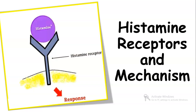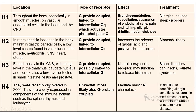Histamine serves as an important part of our body's immune response. When we come in contact with an allergen such as pollen or animal dander, histamine is released by the body to the site of contact. The intention of this response is to help the body deal with the irritation caused by the allergen; however, the histamine release actually causes allergic symptoms. The released histamine then binds with histamine receptors to give a response.